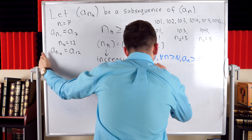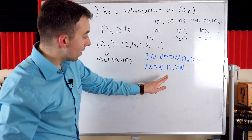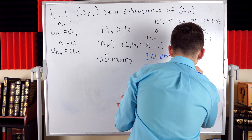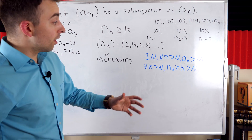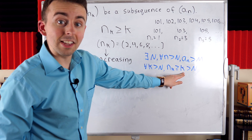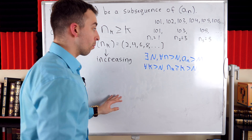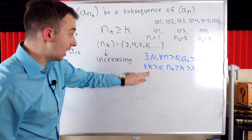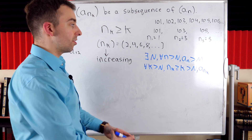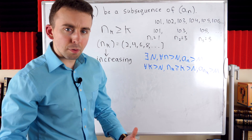Specifically, for every k greater than N, we know that n_k is greater than N. Why? Because n_k is greater than or equal to k, and k is greater than N. So if we go k terms into our subsequence, that's at least k terms into the original sequence. Since k is greater than N, we've gone more than N terms into the original sequence, meaning all those subsequence terms satisfy the required inequality.